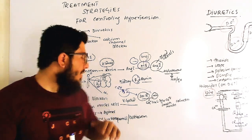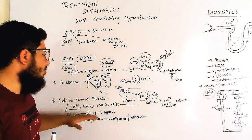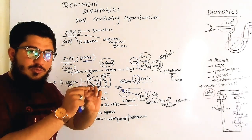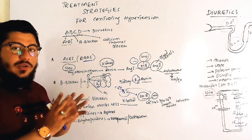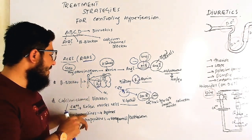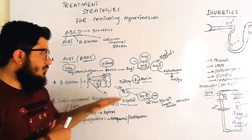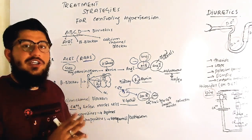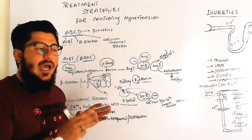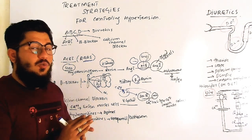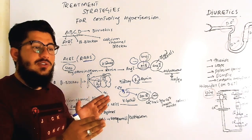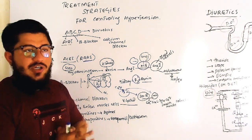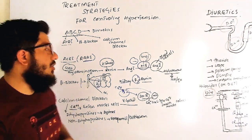Calcium channel blockers are classified into two groups. Dihydropyridines act specifically on vascular smooth muscle calcium channels to cause blood vessel relaxation. Non-dihydropyridines act on both the cardiac myocardial cells and the smooth muscles of blood vessels, affecting both heart function and vascular tone.